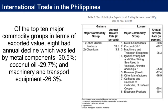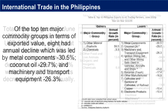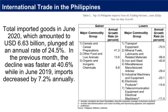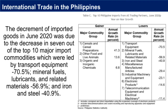Of the top 10 major commodity groups in terms of exported value, eight had annual decline which was led by metal components at negative 30.5%, coconut oil at negative 29.7%, and machinery and transport equipment at negative 26.3%. Total imported goods in June 2020 amounted to US$6.63 billion, plunging at an annual rate of 24.5%. In the previous month, the decline was faster at 40.6%, while in June 2019, imports decreased by 7.2% annually. The decrement in June 2020 was due to decreases led by transport equipment at negative 70.5%, mineral fuels, lubricants, and related materials at negative 56.9%, and iron and steel at negative 40.9%.